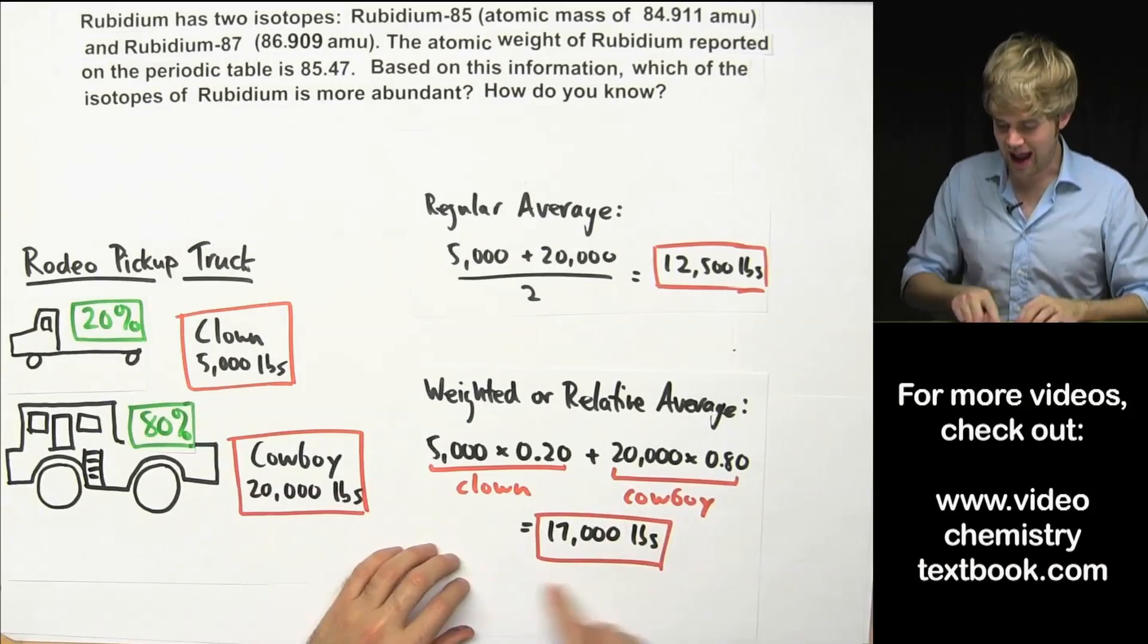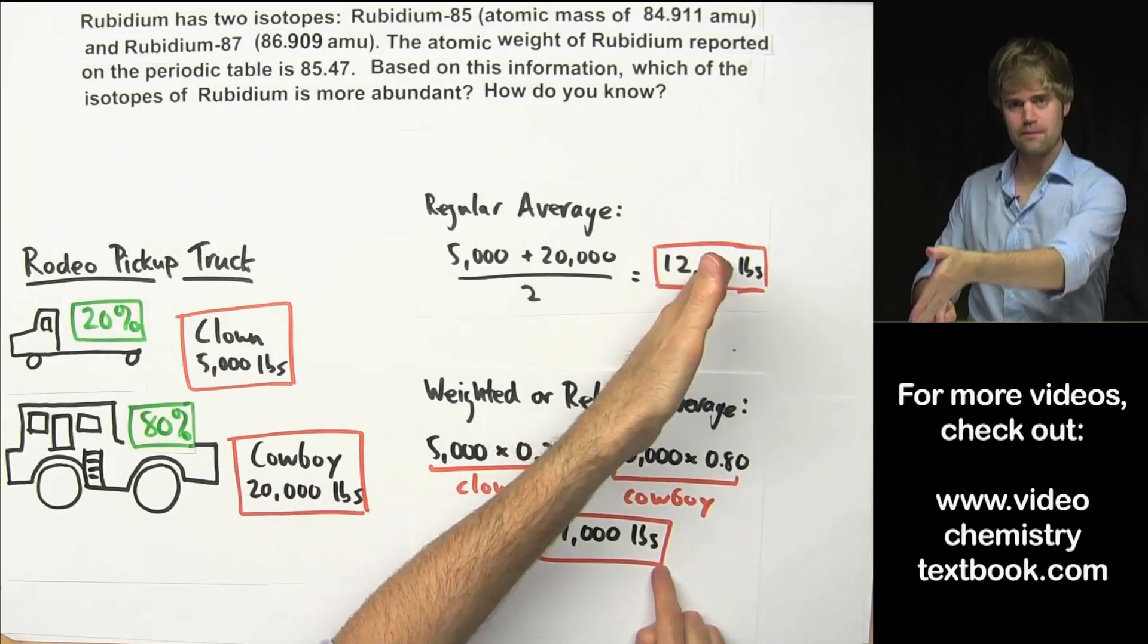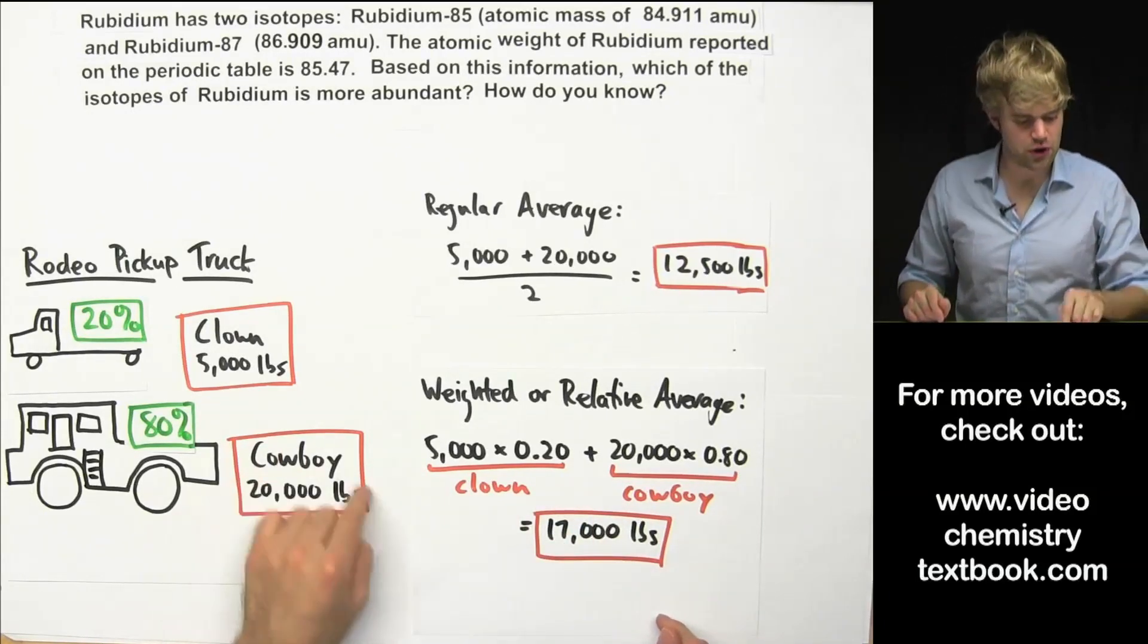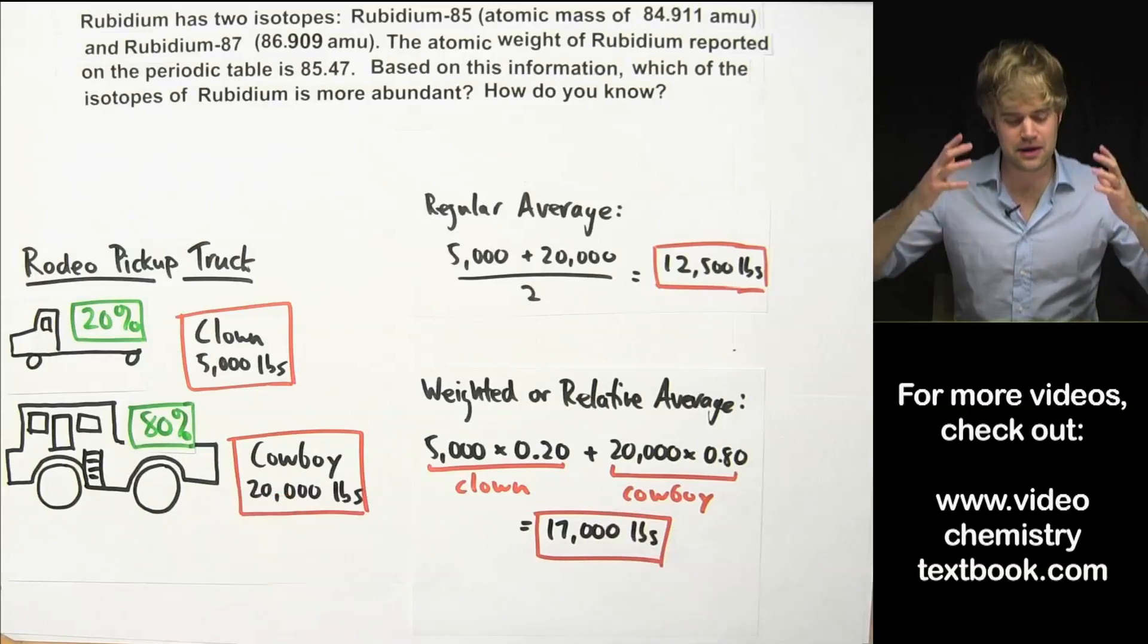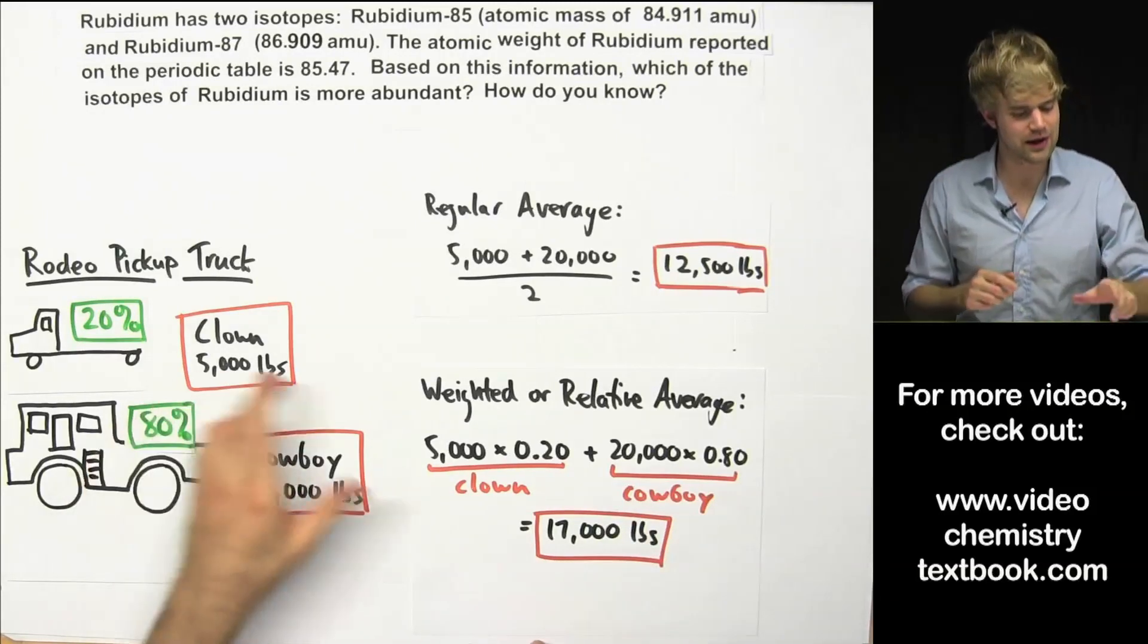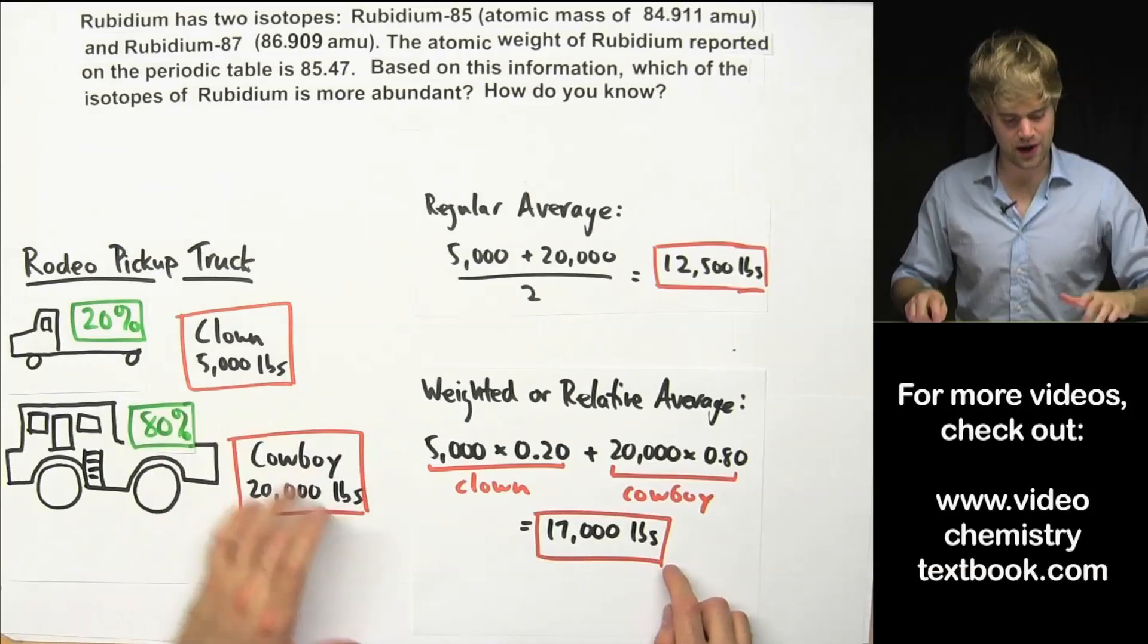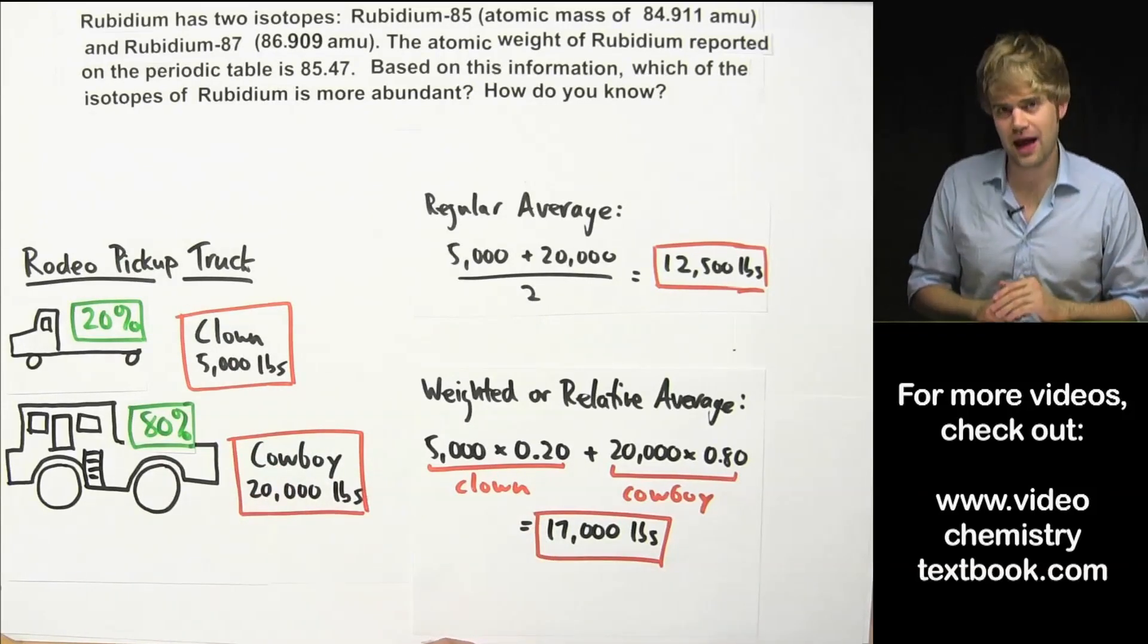we end up with an average that's not right in the middle. We end up with an average that's tilted higher, closer to the weight of the cowboy. And that makes sense because there are many more cowboy pickups on the road. Our average of these weights should be closer to the weight of the cowboy.